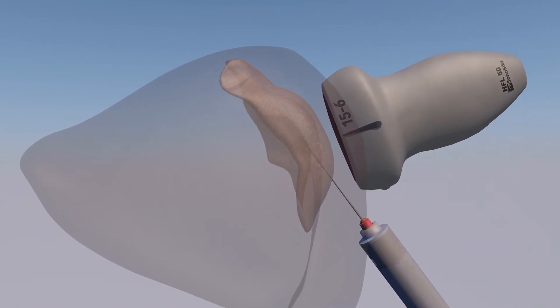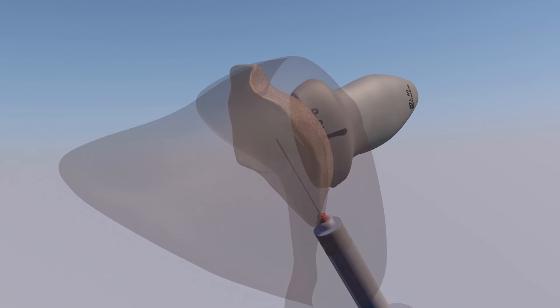And now we're just looking at the subdeltoid bursa in relation to the deltoid muscle, which is translucent here.